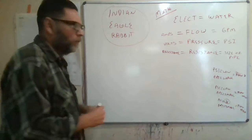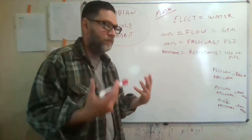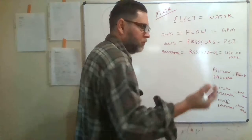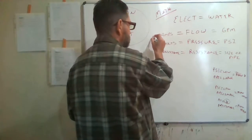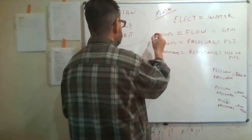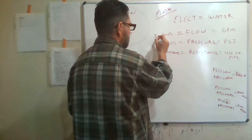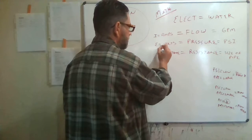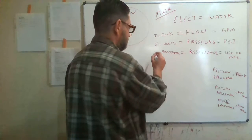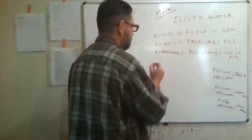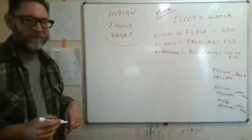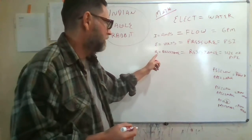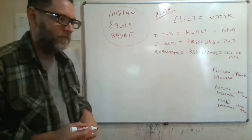When you're doing math, you use variables to represent things — usually letters for things you don't know. Amps is always represented in a formula as I. Volts is represented as E. And resistance? R. Our three friends just showed up: the Indian is the flow, the Eagle is the pressure, and the Rabbit is the resistance.